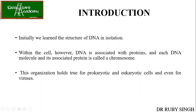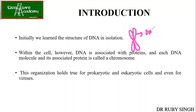We have already learned the structure of DNA and how it has been isolated. There is another video where you can refer to how DNA from different species — whether bacteria, plant, or animal — can be isolated. Now, within the cell, DNA is always associated with proteins, and each DNA molecule and its associated protein is called the chromosome. What we see in the microscope is nothing but DNA wrapped with proteins.